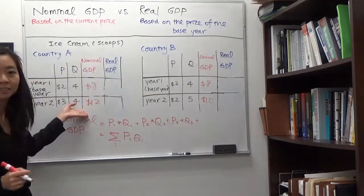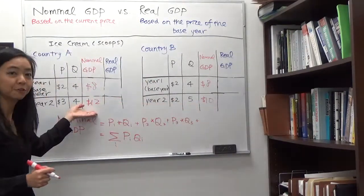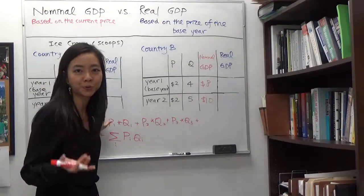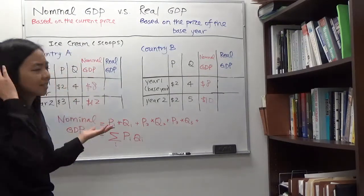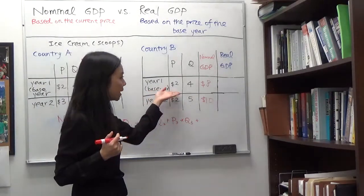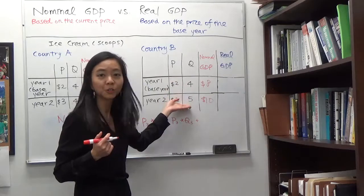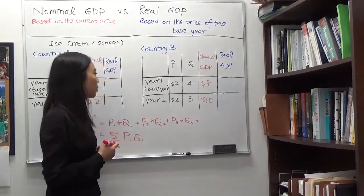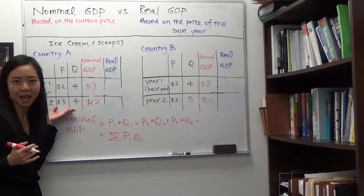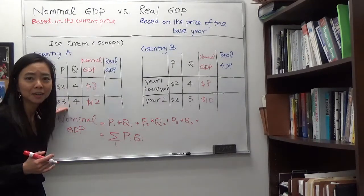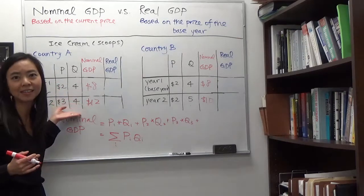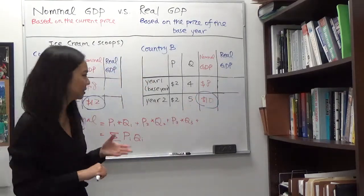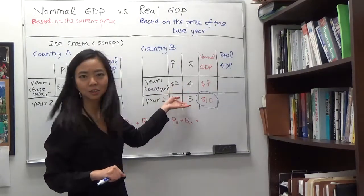Now if you compare these two countries and only look at their nominal GDP from year one to year two, you might jump to the conclusion that country A has better growth. But that doesn't add up, because in country B the price level remains the same, but their people have more goods and services to enjoy — five scoops instead of four. In country A, the price level is higher but the amount of ice cream is exactly the same. So country A's nominal GDP is higher than country B's, yet country B's people have more ice cream to enjoy.